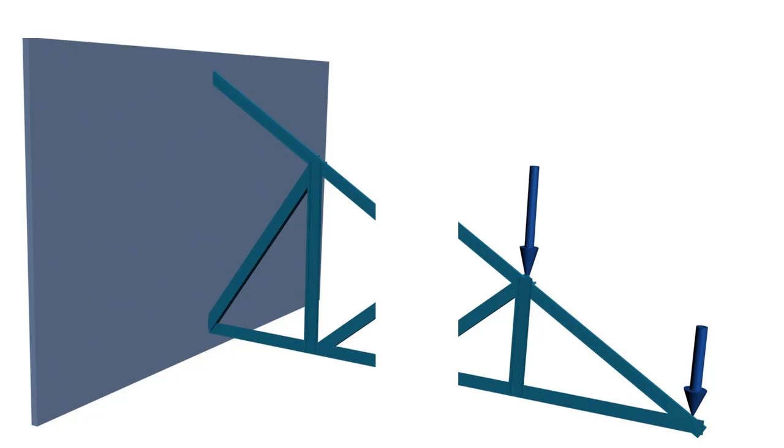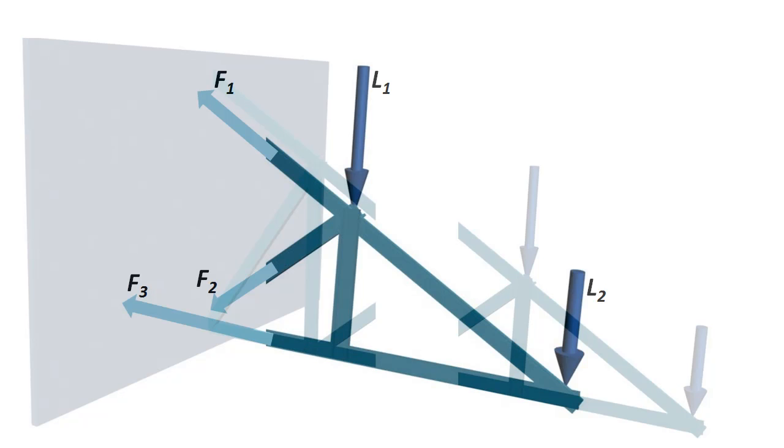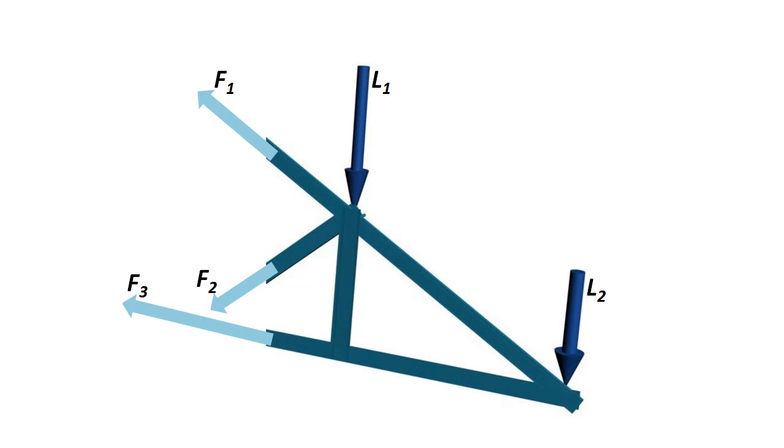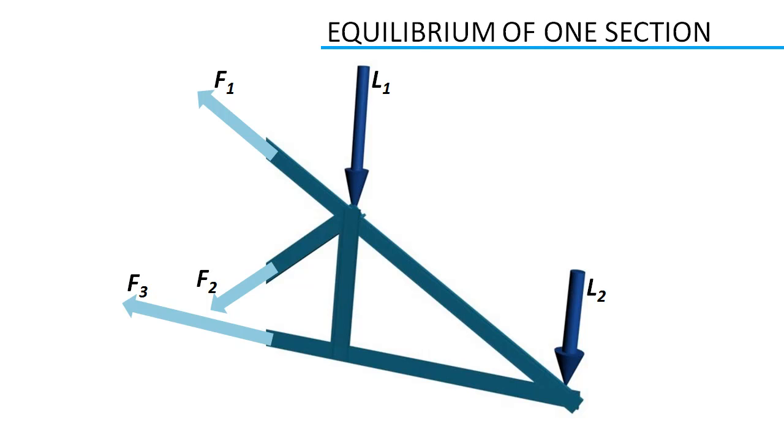Section at right-hand side does not have a support, so if I apply concept for equilibrium to that section, we need not solve for reaction forces. Assume all three internal forces are tensile in nature. Since this section is under equilibrium, we can say sum of horizontal forces is zero, sum of vertical forces is zero, and moment produced by truss forces at any point is zero. Using these equations, we can solve for three unknown forces.